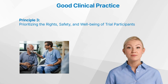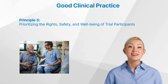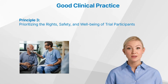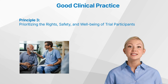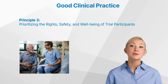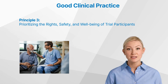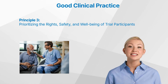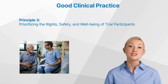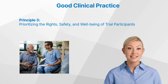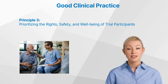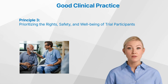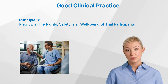Principle 3: prioritizing the rights, safety, and well-being of trial participants. The rights, safety, and well-being of trial participants are of utmost importance and should take precedence over the interests of science and society. This principle emphasizes the protection of participants from harm and exploitation.